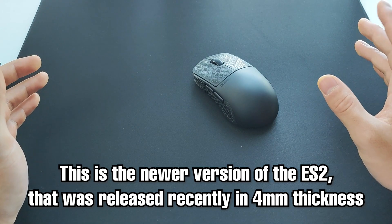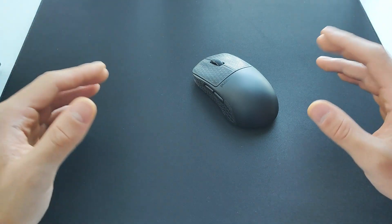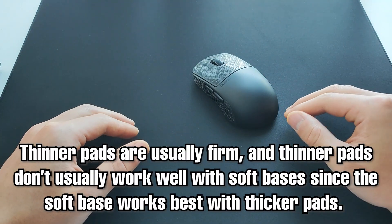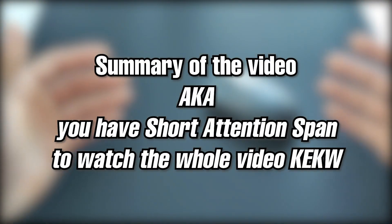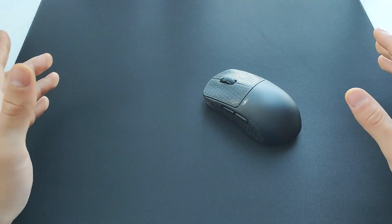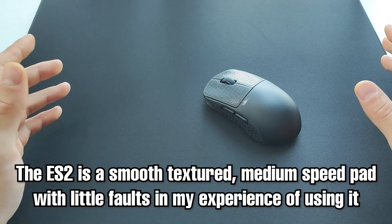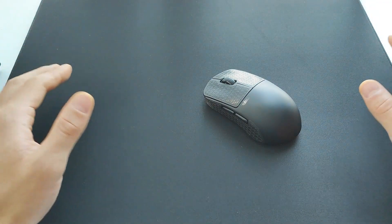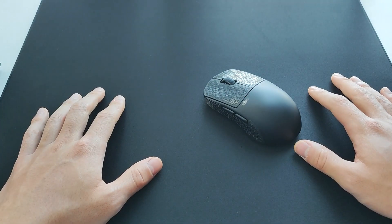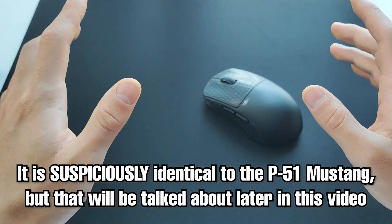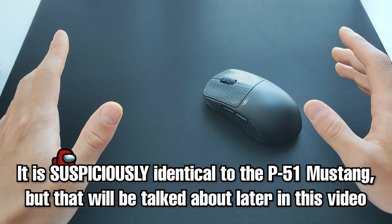And so here we have the 4mm version. As I'm sure you guys all know now, I prefer thicker pads, which is why I requested the 4mm. So to give you guys a quick summary, as per usual, the ES2 is a smooth medium speed pad with essentially nothing I can fault it on. It really is almost identical to a P51 Mustang, but we'll discuss those specifics in the comparison section.